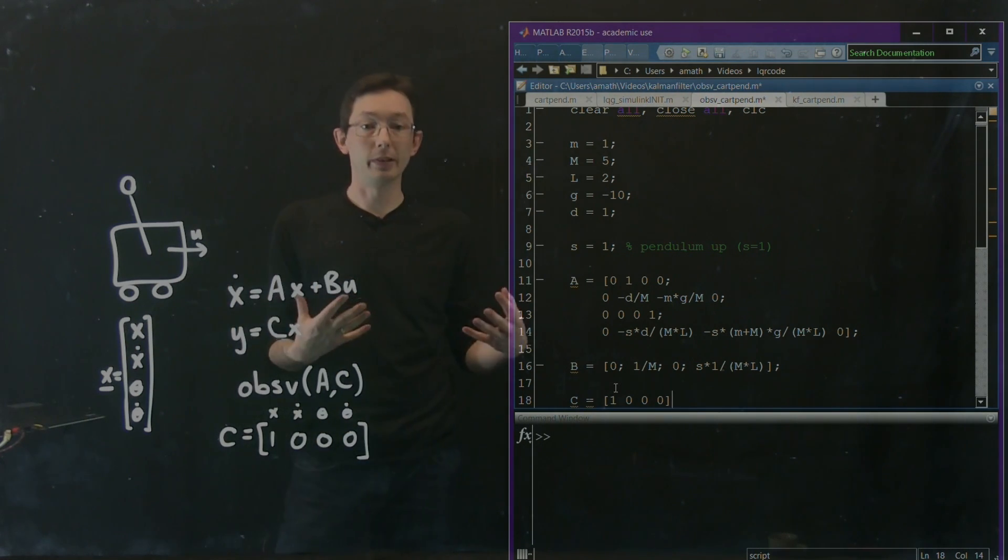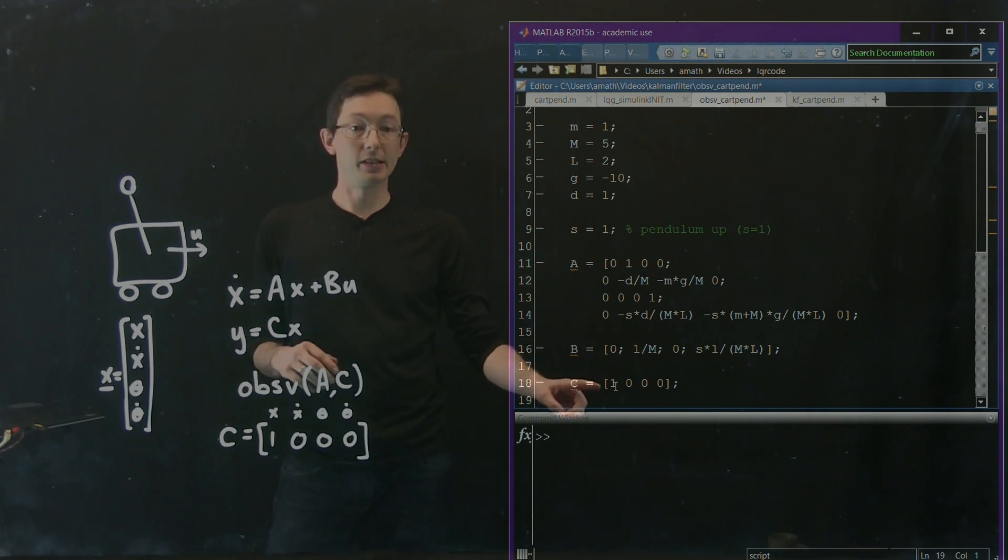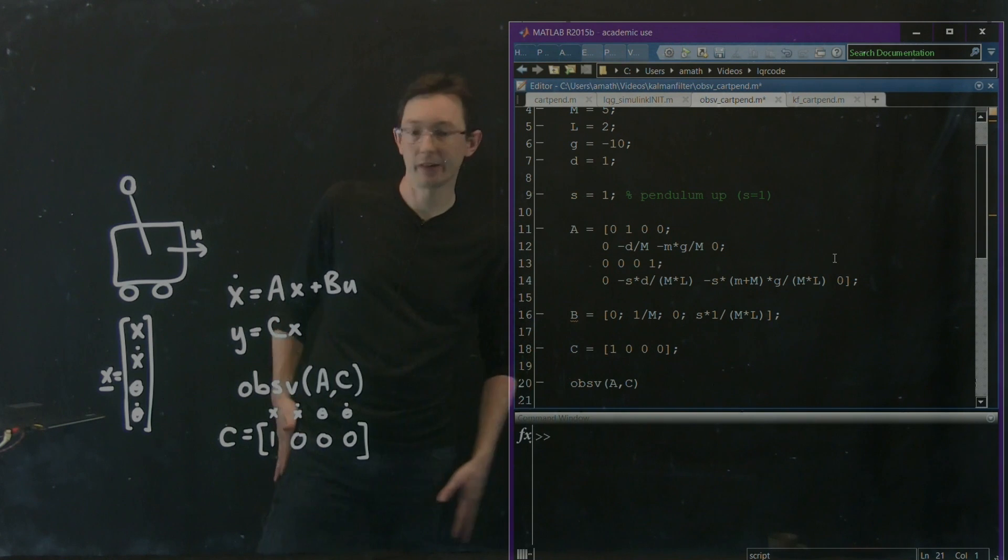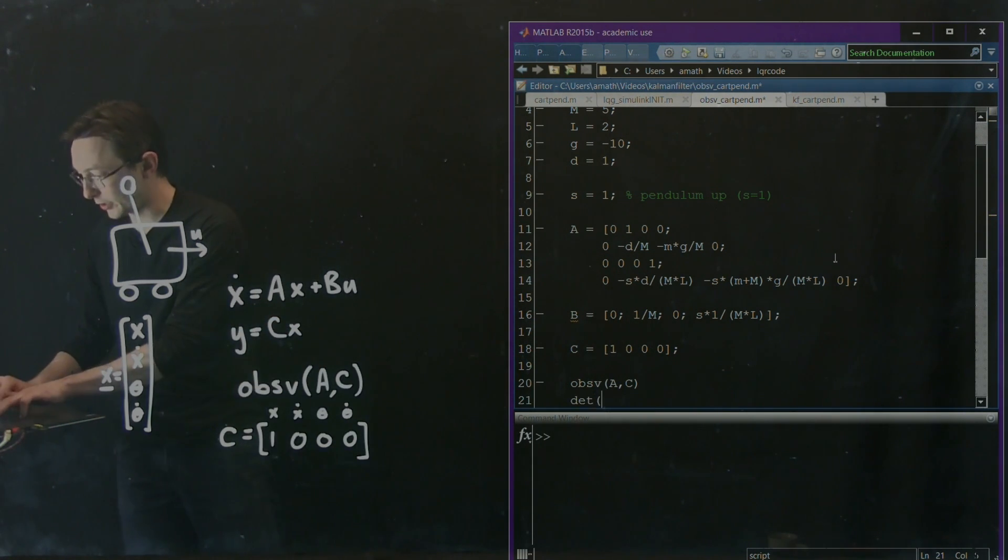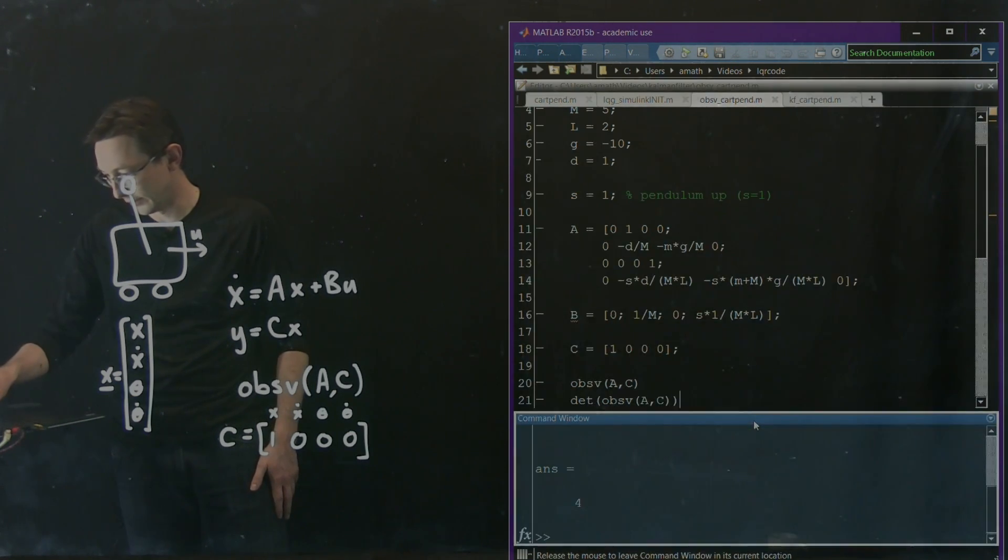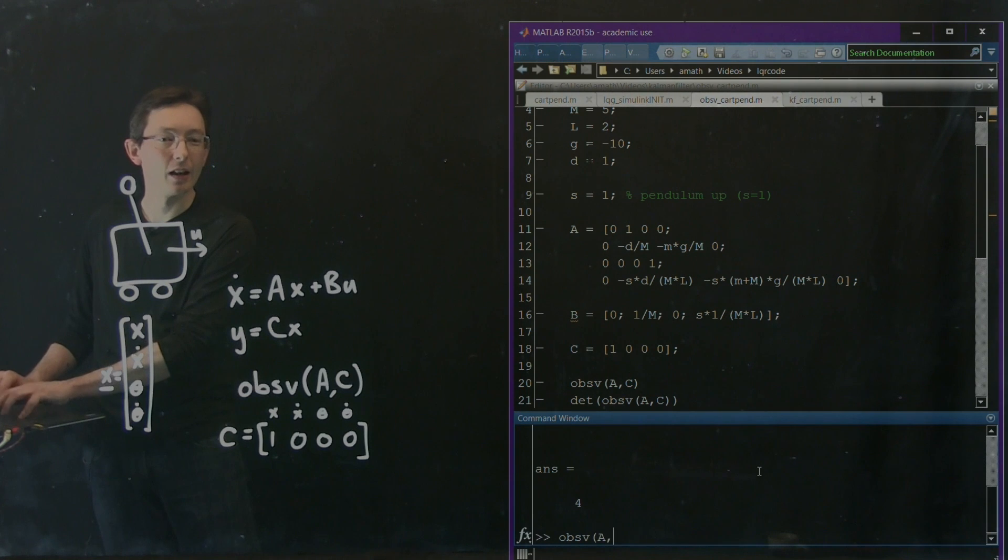Just like with controllability, all I have to do is define the A and the C matrices. Then I can type in OBSV A, C. I'm going to type that in so that we see the output. And then we're going to look at the determinant of OBSV A, C to make sure that it's full rank. If it has a determinant, then it's going to be full rank. Now I'm just going to run this code.